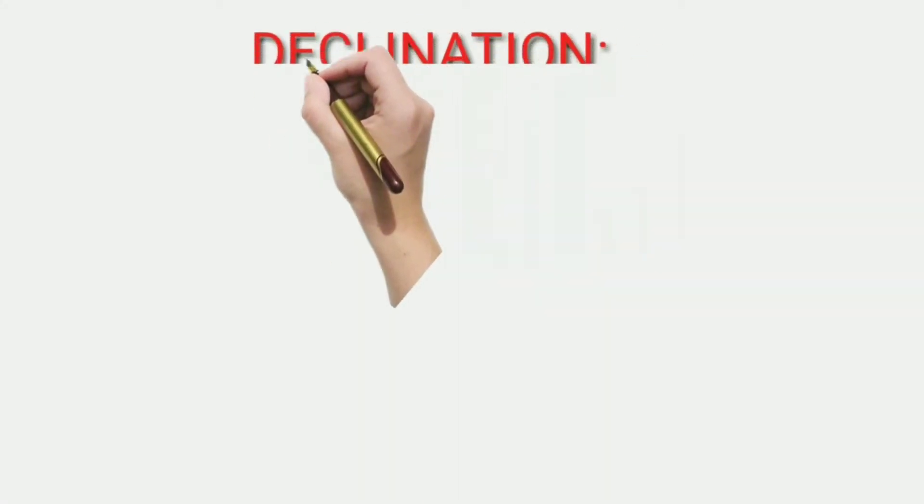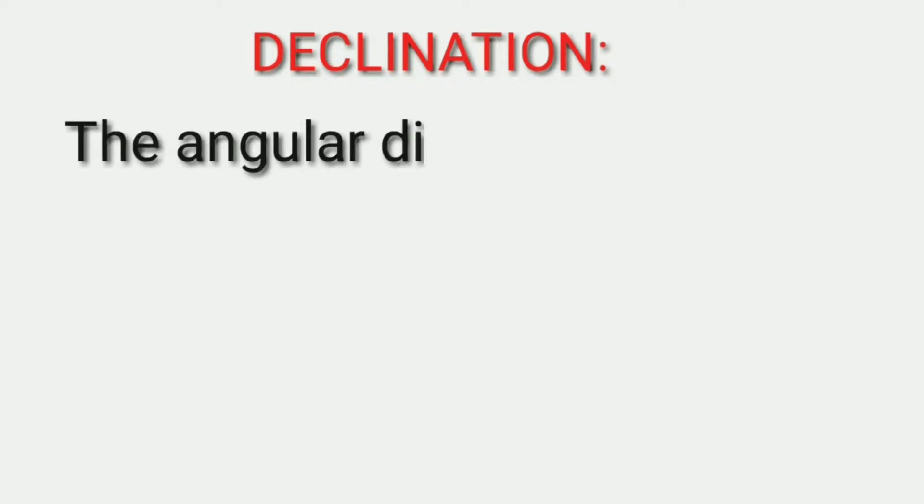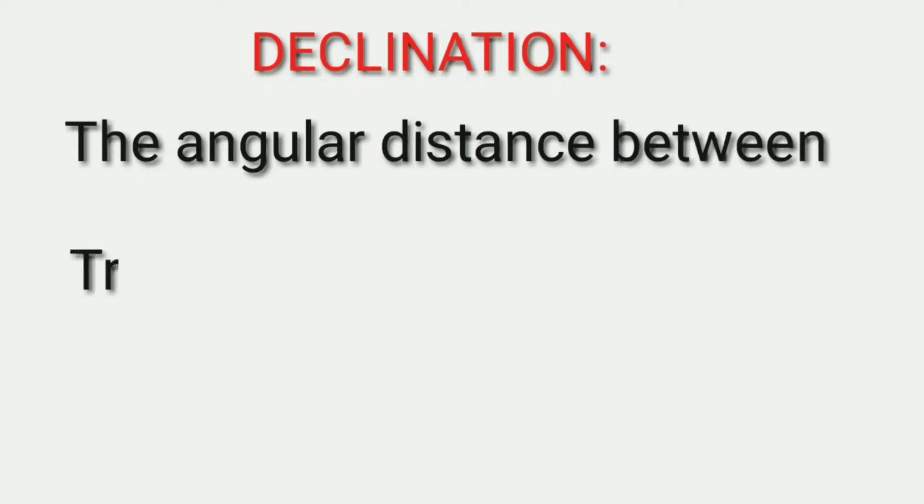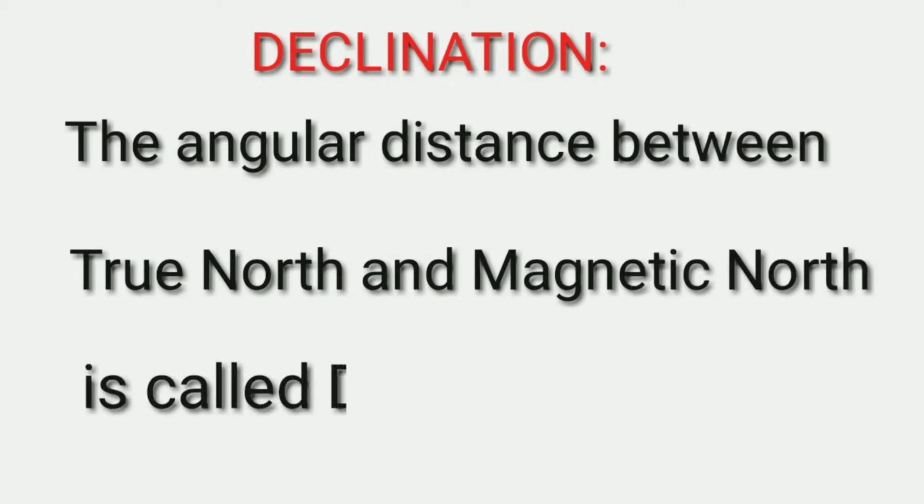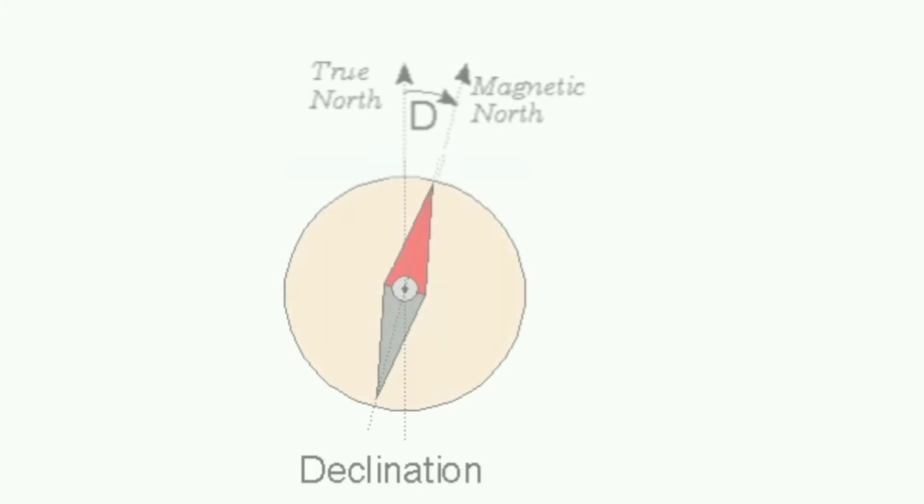Hello students, today I am going to teach you declination. The angular distance between true north and magnetic north is called declination, which is represented by a simple diagram.